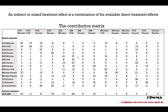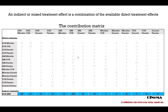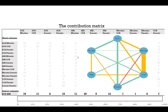An indirect or mixed treatment effect is a combination of the available direct treatment effects. The contribution matrix shows the available direct evidence in the columns and the estimated mixed and indirect comparisons in the rows. The matrix informs us that in order to estimate the odds ratio between ACE and ARP, 10% of the information comes from ACE versus beta blocker studies, 11% from ACE versus CCB studies, but most of the information comes from ARP versus CCB studies.